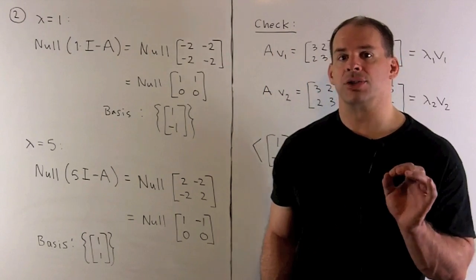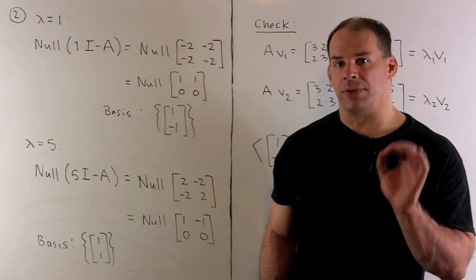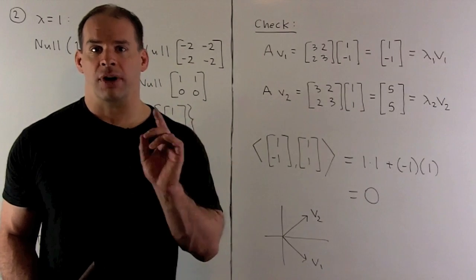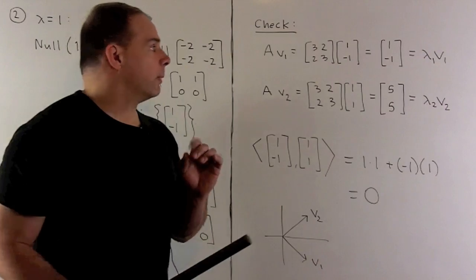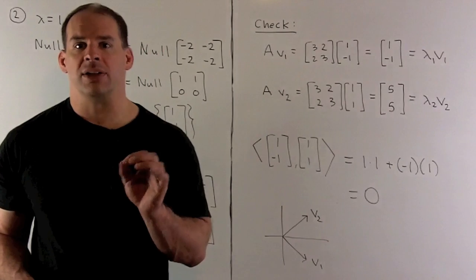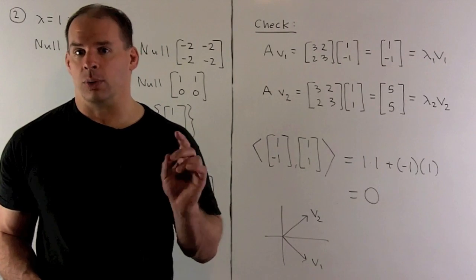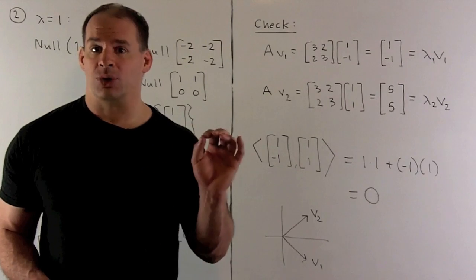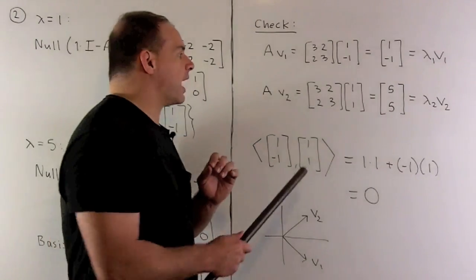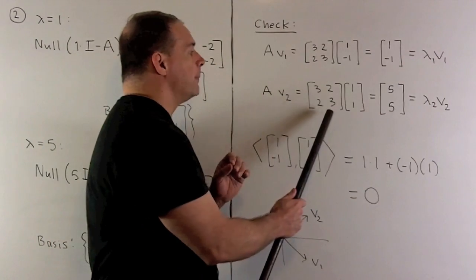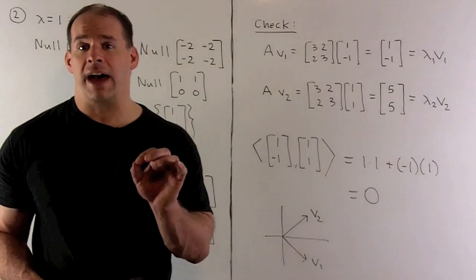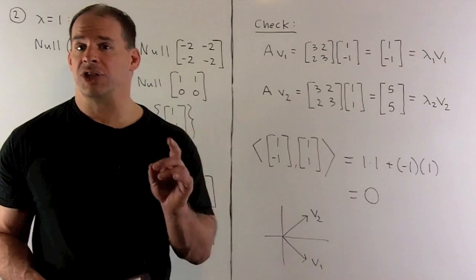Now there are a few things we want to check. First, I want to apply A to each basis vector to verify we have eigenvectors. Applying A to our first vector [1, -1], what comes out is [1, -1] — so the eigenvalue is one, and we get lambda times our original V. That checks out. For our second vector [1, 1], applying A gives [5, 5]. Factoring out a five, we have eigenvalue five times our original vector. That checks out also.